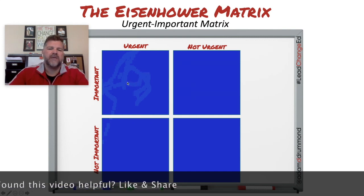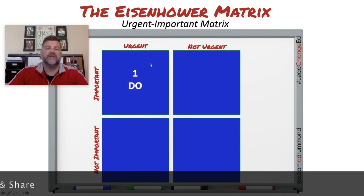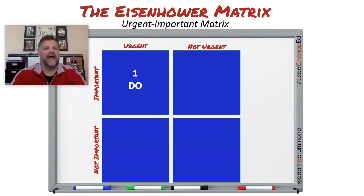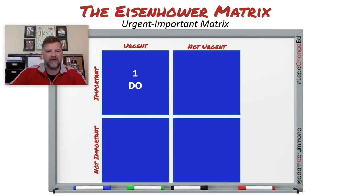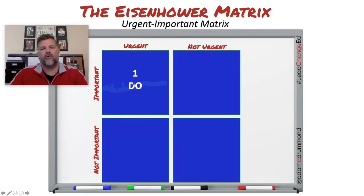For example, if something comes across your desk and it's both important and urgent, the matrix identifies that task as something you need to do right now. When I was a building principal, if a parent left me a voicemail after I'd been in classrooms, I would identify that call as important and urgent — something I want to resolve right away so the parent isn't sitting at home frustrated.